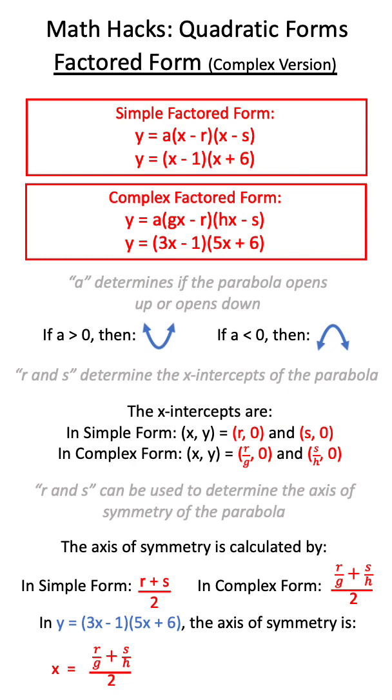So, in an equation like this, the axis of symmetry would be x equals 0.767.